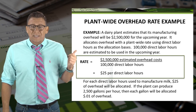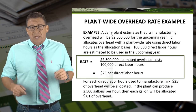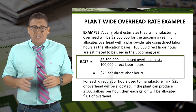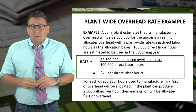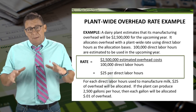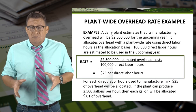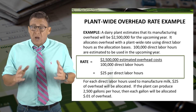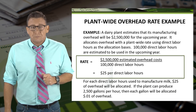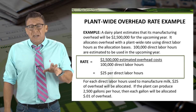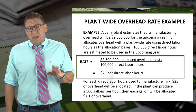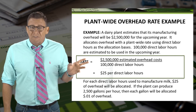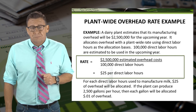So let's look at an example of a dairy plant. I worked in the dairy industry for six years after I graduated from college, most of that time as a cost accountant, and one of my tasks was to determine product costs each month. A dairy plant estimates that its manufacturing overhead will be $2.5 million for the upcoming year.